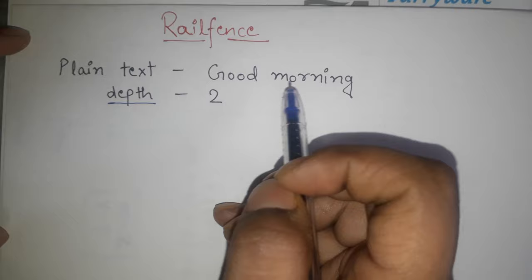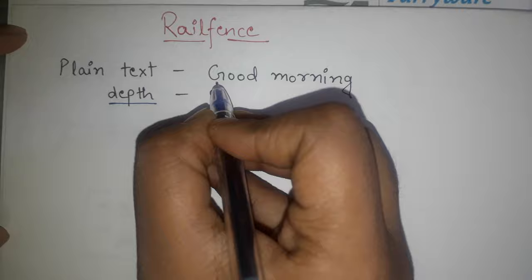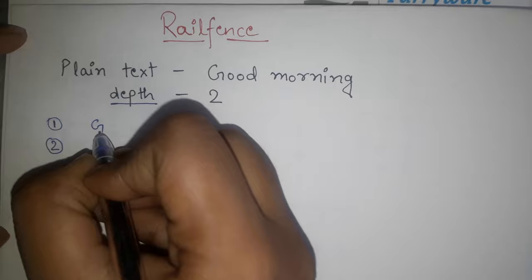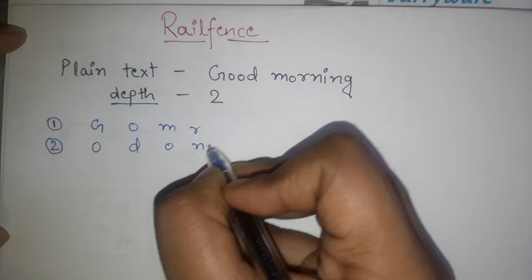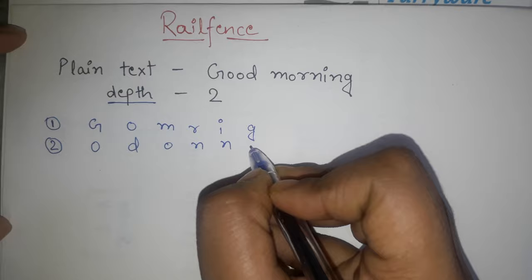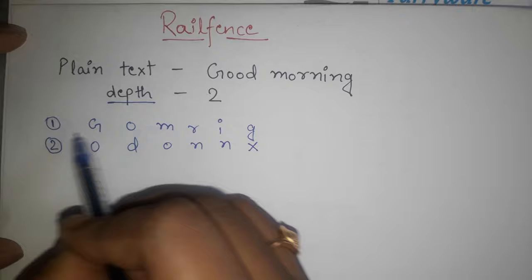For example, we have given good morning here where depth is given as two rows. We have given two rows. For example, good morning: G-O-O-D M-O-R-N-I-N-G, and when it is blank, it is small, so we can write X. So we can write depth 2, so we can write it in rows.